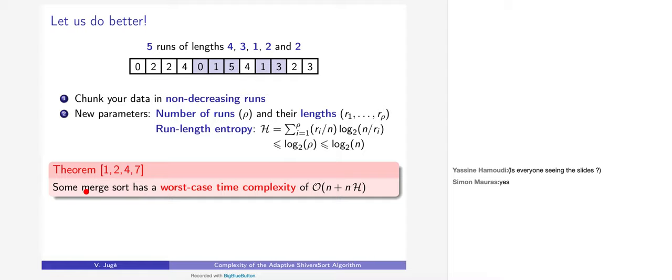There is a theorem, proved many times, that there exists a merge-sort algorithm whose worst-case time complexity is of the order of magnitude of n + n·H. Compared to what we had before — n log n — we have replaced log n by the entropy H, which is not much smaller in general but can be much smaller, for instance if the array is already sorted. It turns out that TimSort does have such a complexity.